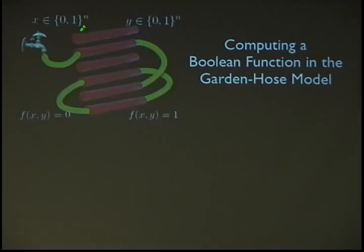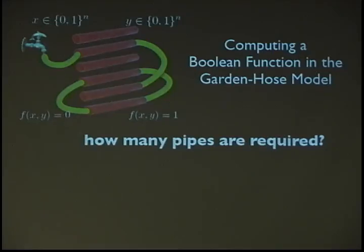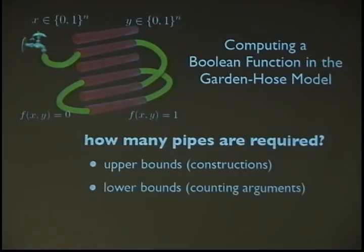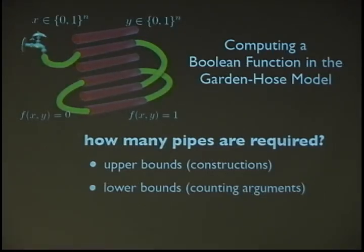So what I've just shown you is a simple mechanical model of computing a Boolean function in the garden hose model. To go over it quickly: you look at your input, you wire up your ends of the pipe, Bob does the same depending on Y, the water is turned on, and depending on which side the water comes out, the Boolean function is either zero or one. Now we can ask: how many pipes are required to compute certain functions? We can give upper bounds — for example, 2^n + 1 pipes are sufficient to compute any arbitrary function. We can also give lower bounds, mostly counting arguments, showing that any reasonable function needs on the order of n over log n pipes.